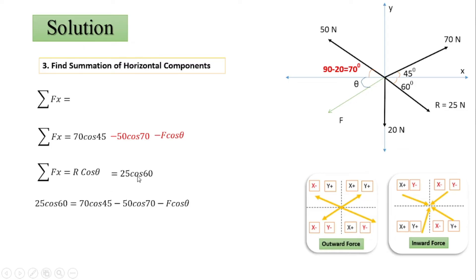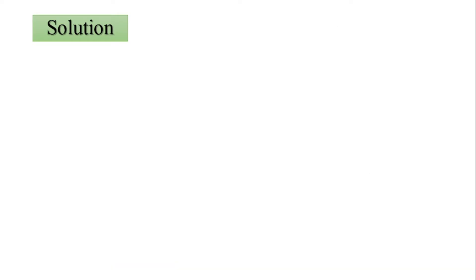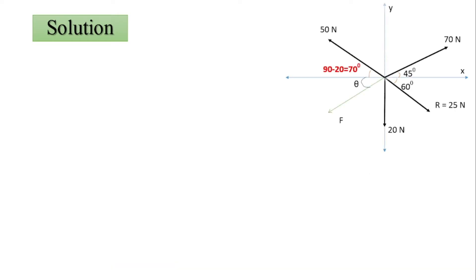Setting up the equation: 25·cos60 equals 70·cos45 minus 50·cos70 minus F·cosθ. Evaluating: 12.5 equals 32.396 minus F·cosθ. Rearranging gives F·cosθ equals 19.896. This is Equation 1.